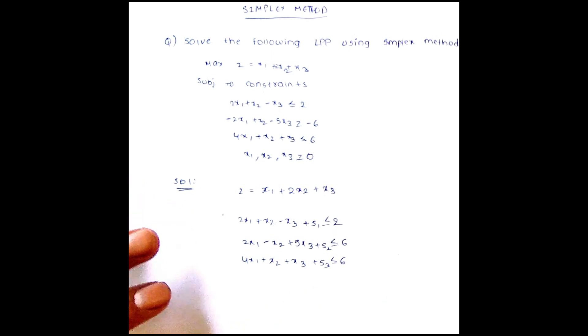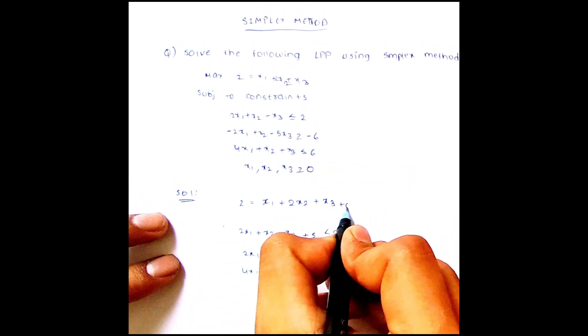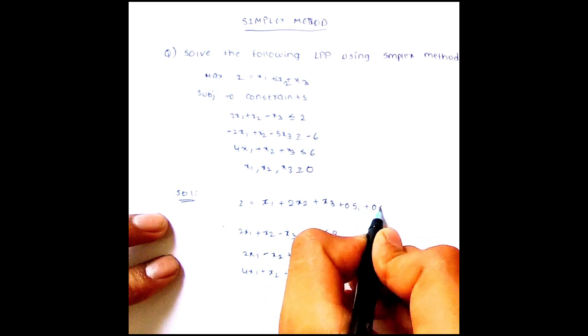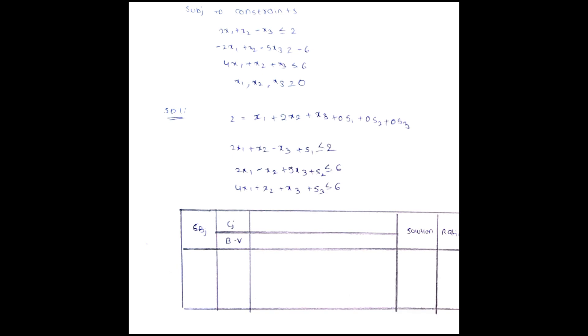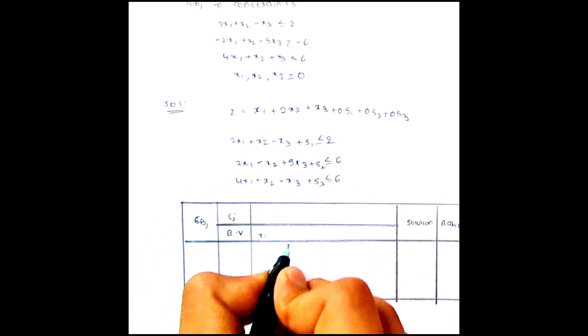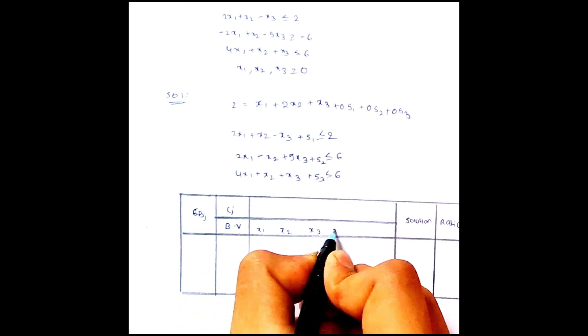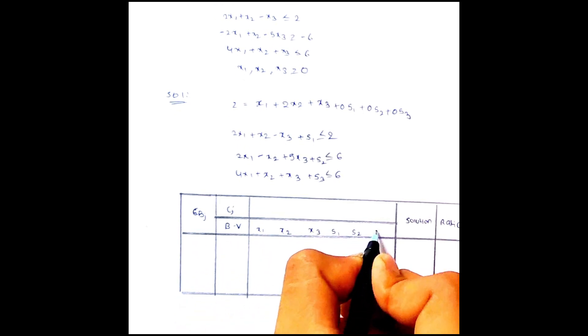We have added slack variables. So let me add them in the main equation: 0s1 plus 0s2 plus 0s3. After writing the three equations and adding the slack variables, we have to draw a table. BV is nothing but the basic variable. Let us write the basic variables: x1, x2, x3, s1, s2, and s3.